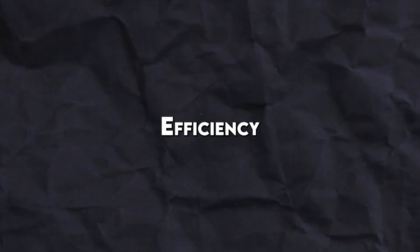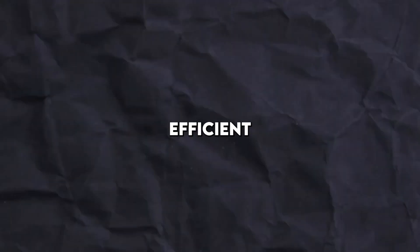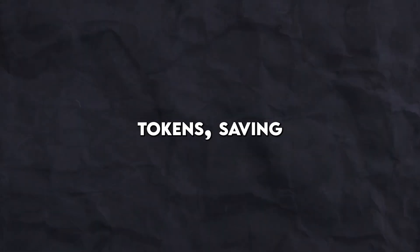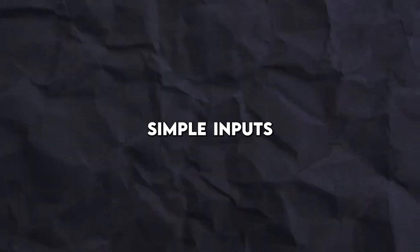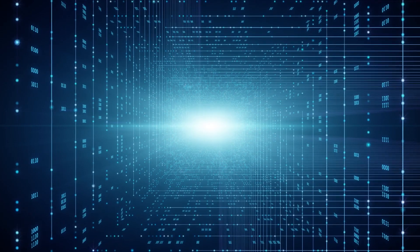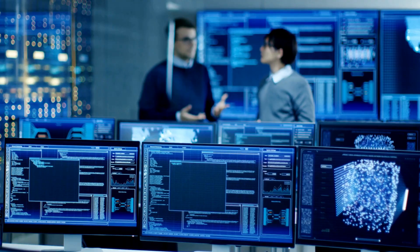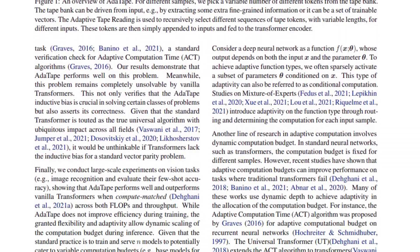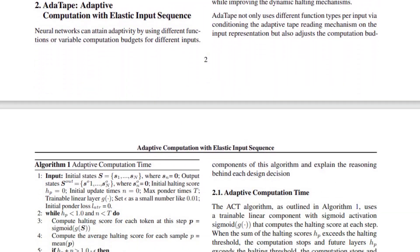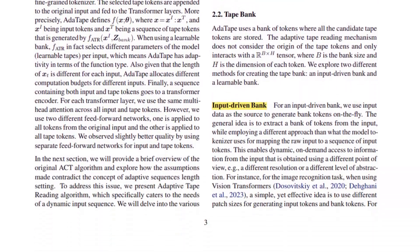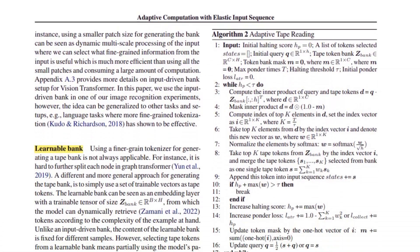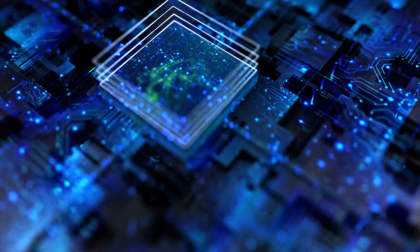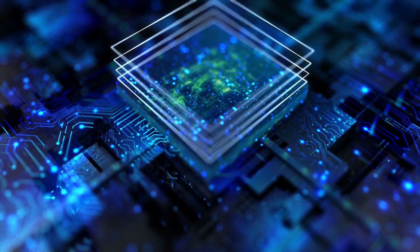When talking about efficiency, Adatape is more efficient than other adaptive computation models because it only processes relevant tokens, saving computation time on simple inputs. The Adatape model developed by Google is a promising advancement in machine learning and neural networks. Its integration of adaptive computation introduces a new dimension of progress which holds the potential to significantly increase efficiency and accuracy in model computation. As the field of machine learning continues to evolve, adaptive computation is predicted to play a vital role.